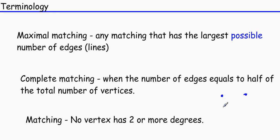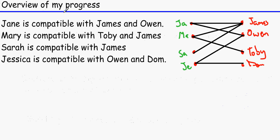So for example, this is a matching because there's no two edges coming from a vertex. There's only one edge coming from a vertex. You cannot have two degrees or two edges coming from this vertex. This obviously has like three and two and two and one.